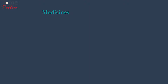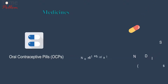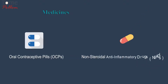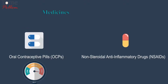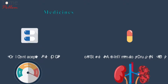Medicines. Medications such as oral contraceptive pills and non-steroidal anti-inflammatory drugs can influence and promote hypertension. OCPs are believed to induce the hormone that increases blood pressure, and chronic non-steroidal anti-inflammatory drugs are notorious for affecting and damaging the kidneys.